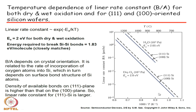The linear rate constant is higher for (111) silicon than for (100) silicon in both dry and wet oxidation, because the density of available bonds on the (111) plane is higher. There is close matching between experimental results and the theoretically obtained silicon–silicon bond breaking energy, confirming the consistency and efficacy of the model in describing the kinetics of oxidation in SiO₂.